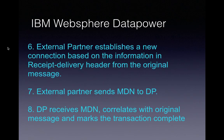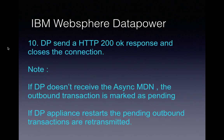The external partner sends the MDN back to DataPower. DataPower receives the MDN and correlates it with the original message. After correlating with the original message, it marks that transaction as complete. Before closing the connection, DataPower sends a similar 200 OK response back to the external partner.